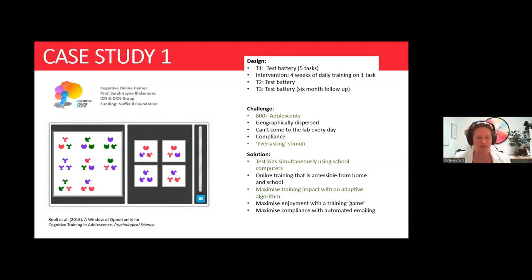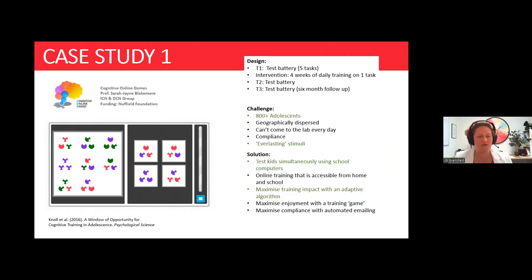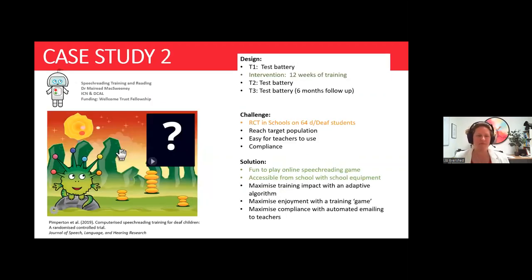How do you get teenagers to complete boring tasks every day for 30 days to see if training shows a sensitive period in cognition? The gamification techniques used in this project involved particle effects — puffs of smoke and stars — rewarding feedback, and a daily trophy cabinet they were incentivized to complete. It was important to keep tasks as close to traditional research as possible, so this involved minimal gamification within the task but an exciting trophy cabinet outside it.